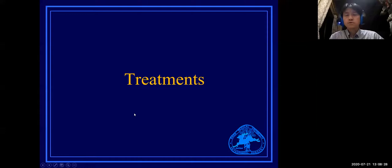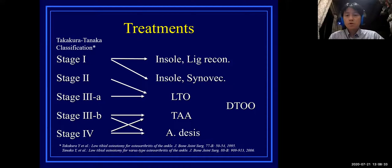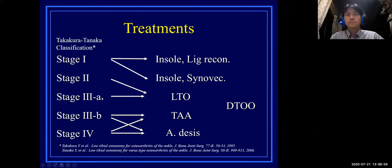From now the talk will turn to treatment. Treatment options are listed by stage: in stage 1 or 2, conservative therapy is the first choice and surgical options are selected according to symptoms. In advanced stages, corrective osteotomy would be selected. Total ankle arthroplasty and arthrodesis are selected for end-stage disease.